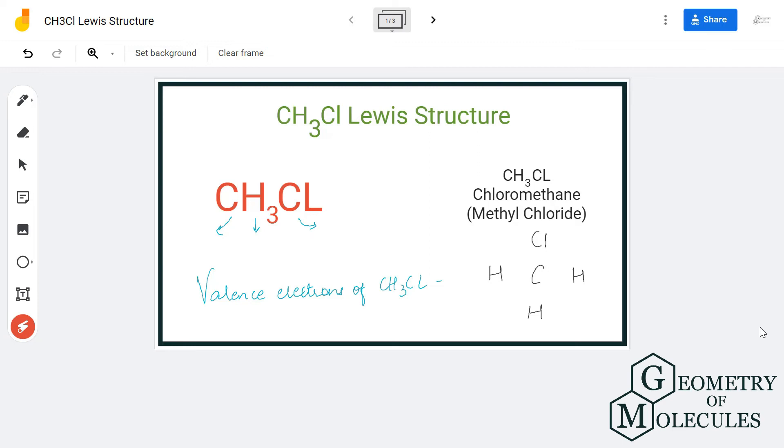Hey guys, today we will look at the Lewis dot structure of methyl chloride, having a chemical formula of CH3Cl. But before looking at the Lewis dot structure, let's first have a look at the total number of valence electrons in this molecule.